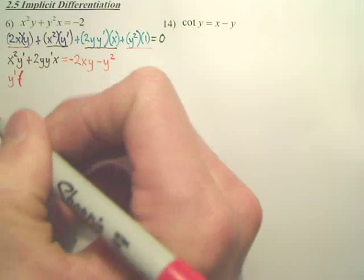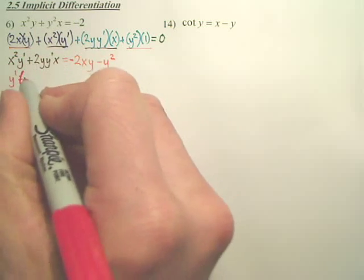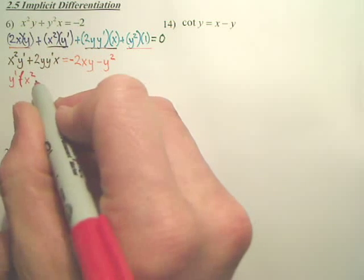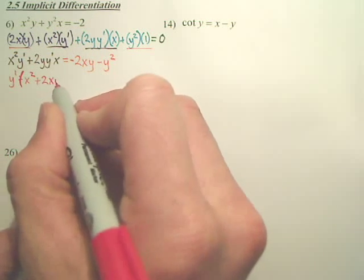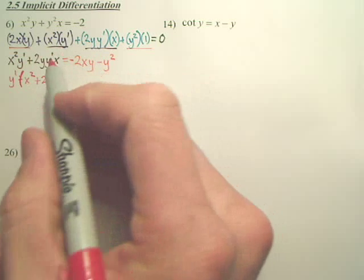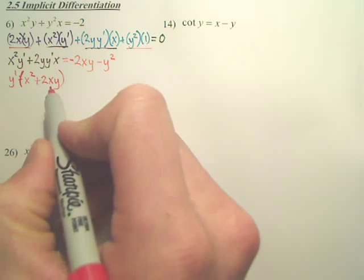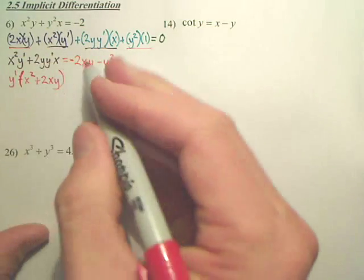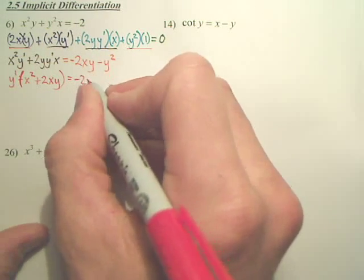y prime out. When I pull a y prime out of here, we're left with x squared. When I pull a y prime out of here, we're left with 2xy, or 2yx. So we pull the y prime out of both of these, the GCF. Just leave this side for now.